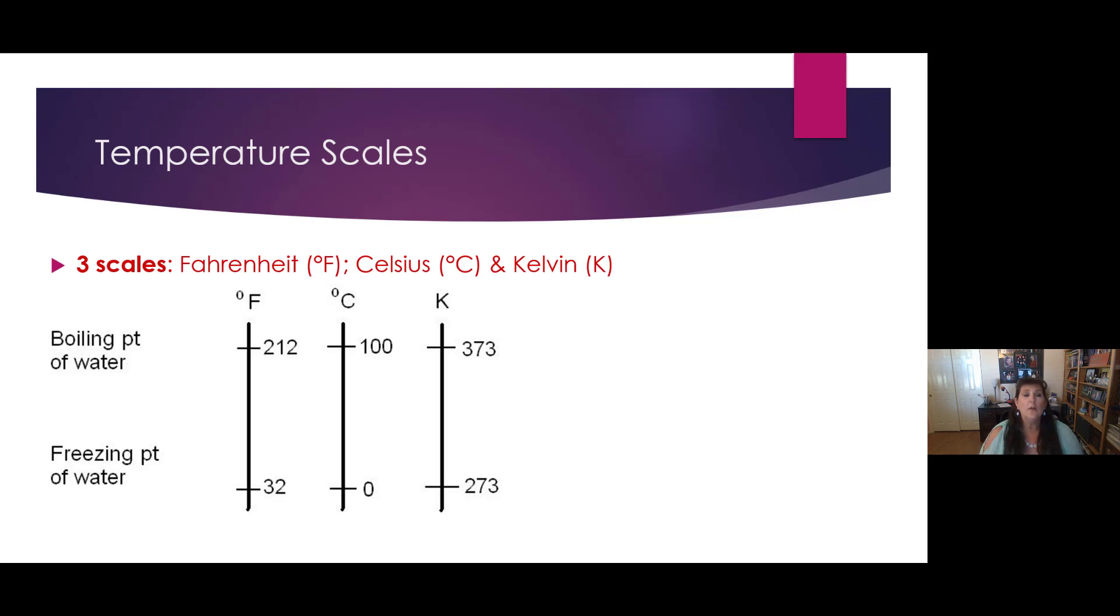There are three different temperature scales. The one we use in the United States for our weather and bodies is Fahrenheit, degrees F. In the rest of the world, they use Celsius, degrees C. And scientists use something called Kelvin, which is just a K, not degrees K. I'll explain that in a minute.